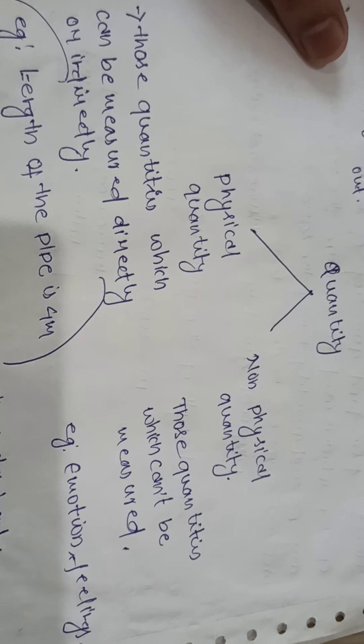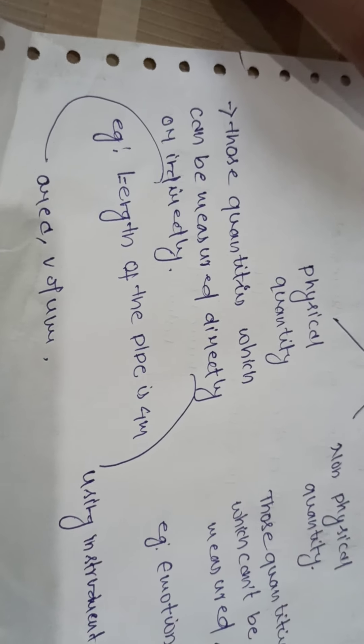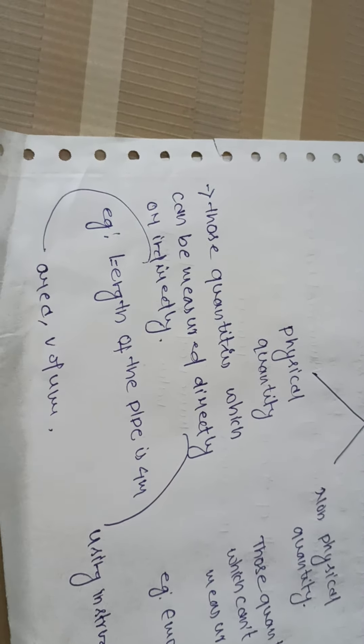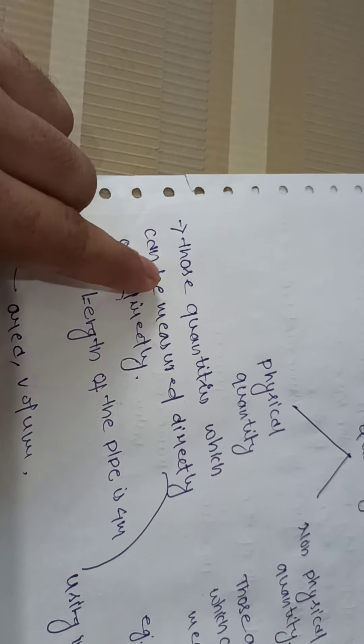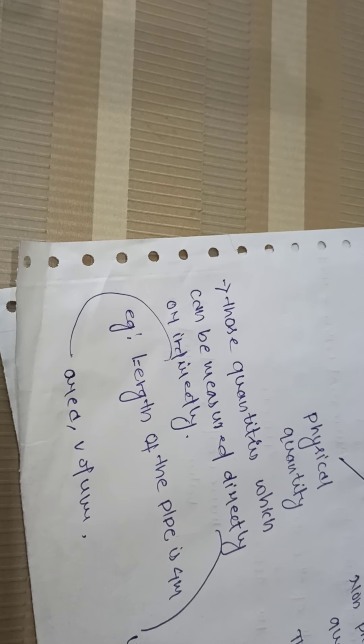Non-physical quantities are those which cannot be measured. To understand these two types, consider this example: if I want to find the length of a pipe — say the pipe is 4 meters long — I use a meter rule to find that length directly. That is a direct method. For indirect measurement, to find the area or volume, you first find length, breadth, and height, then calculate the volume, or multiply length and breadth to get area. That is the indirect method.